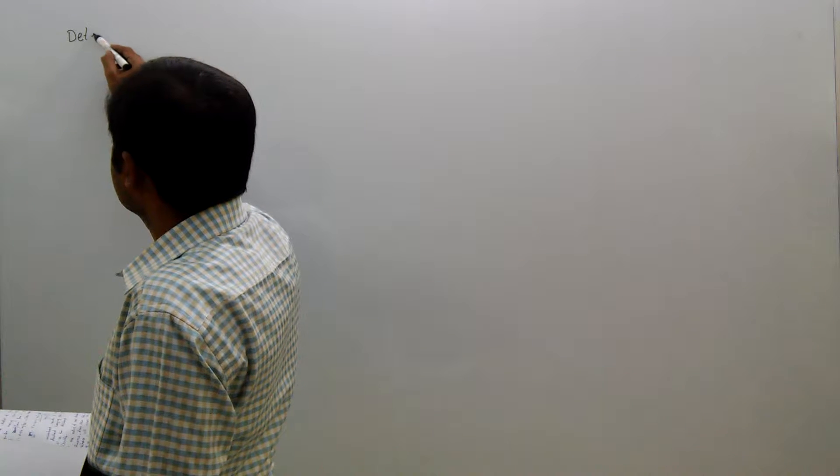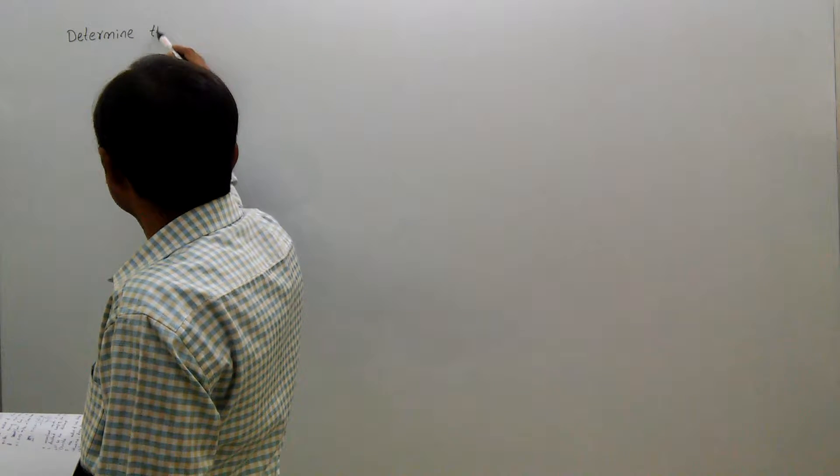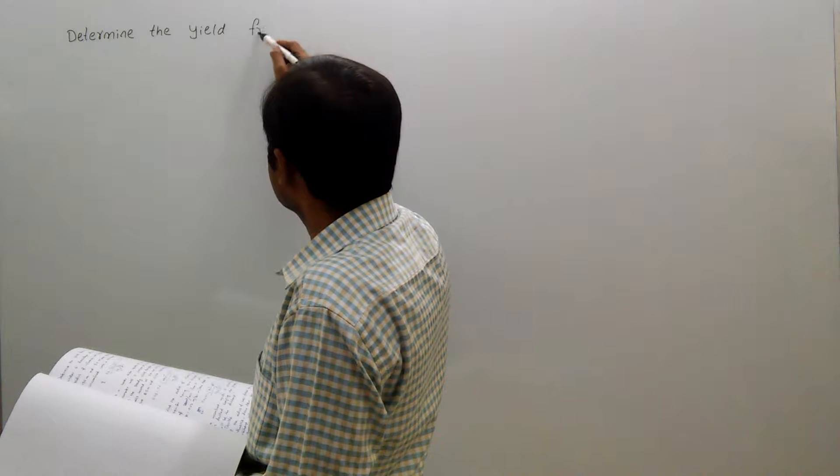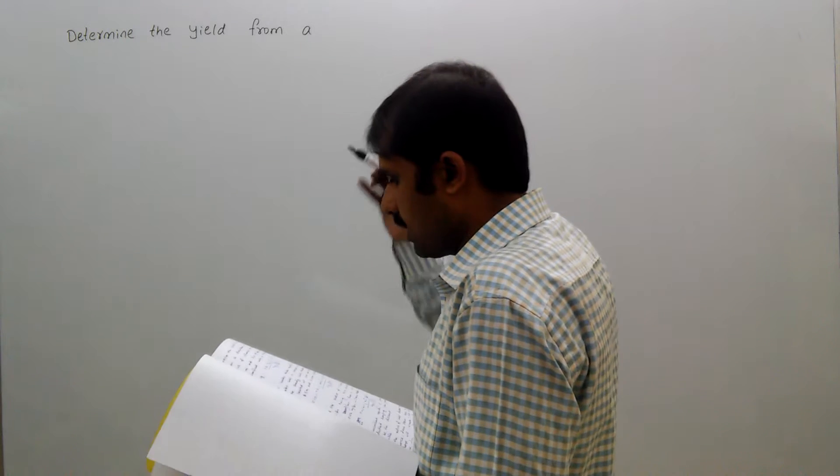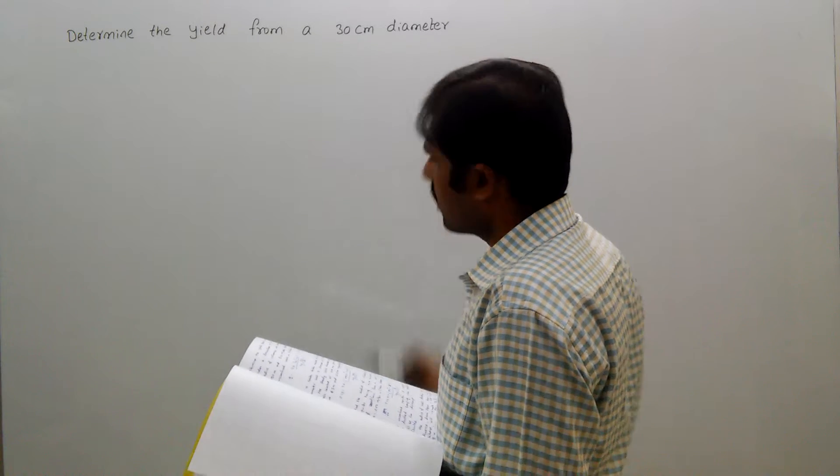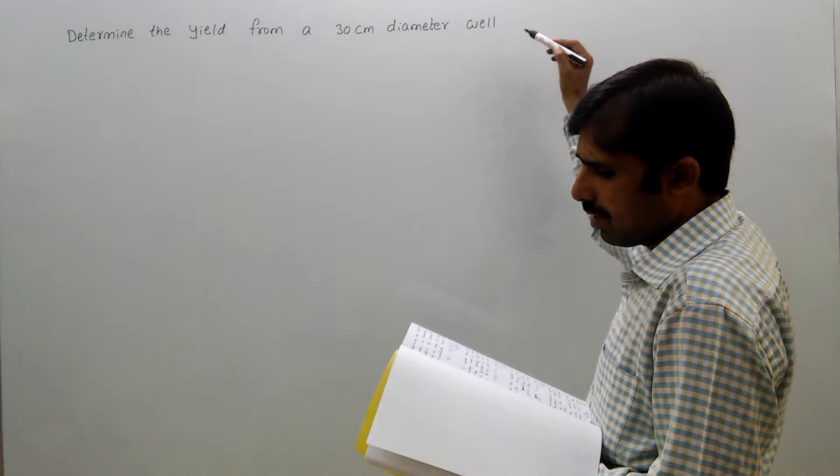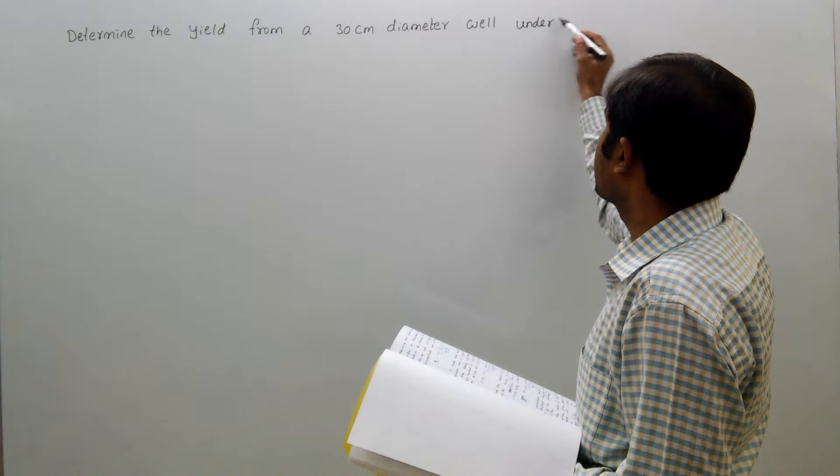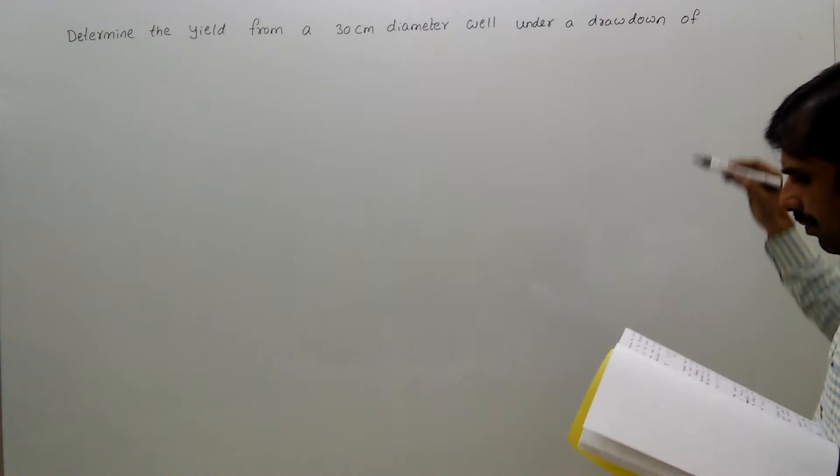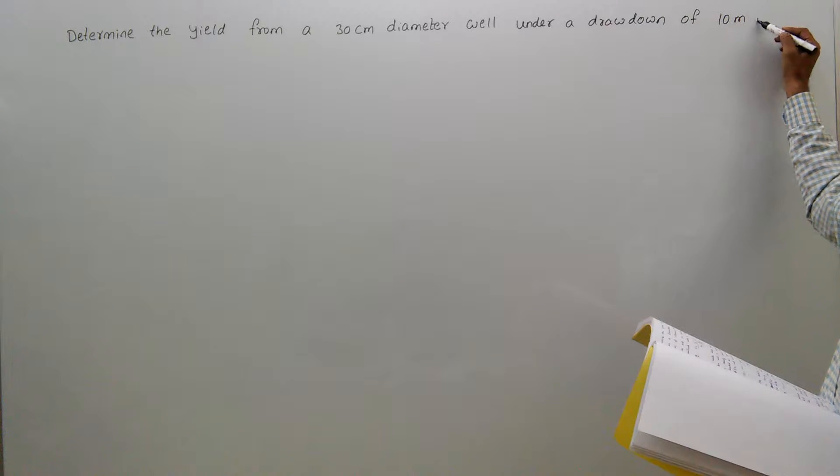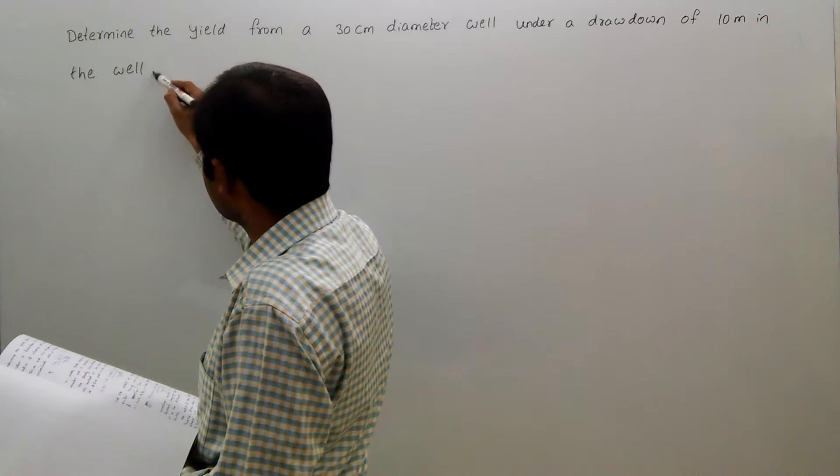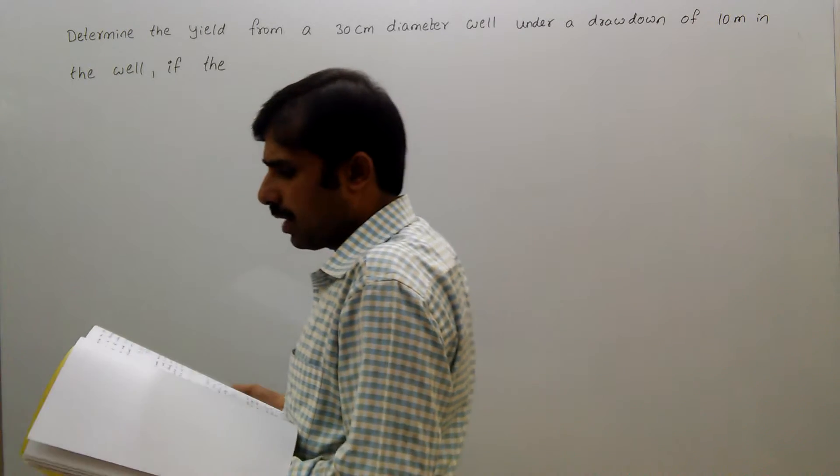Determine the yield from a 30 centimeter diameter well under a drawdown of 10 meters in the well, if the radius of influence and hydraulic conductivity are given.